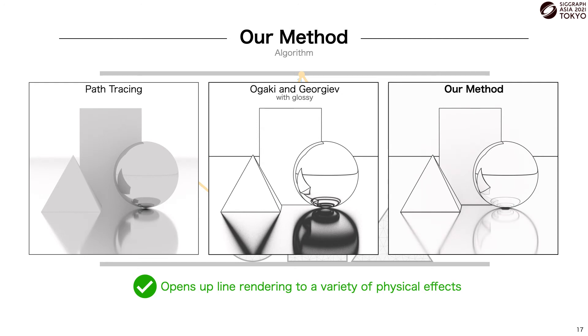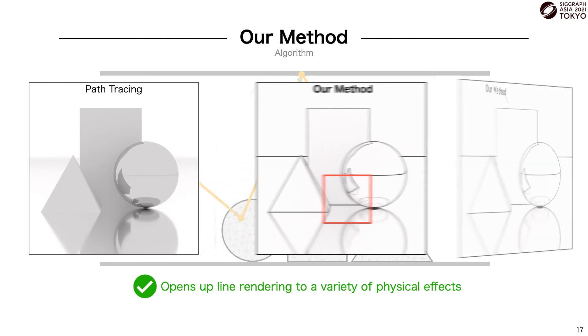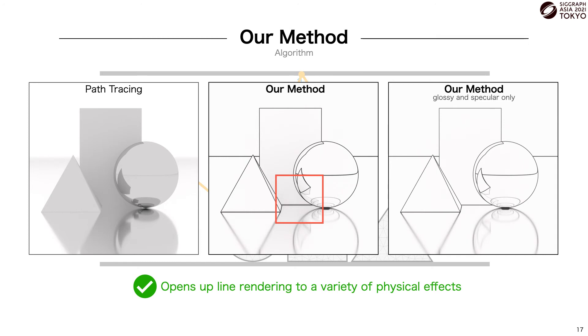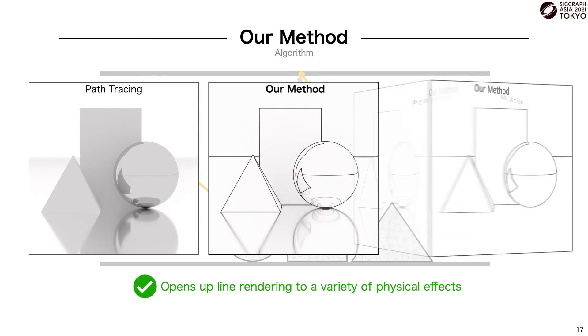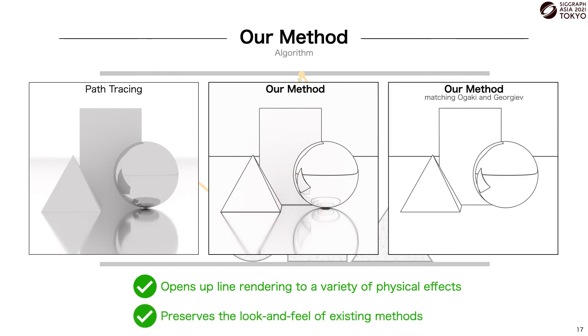However, testing for a line intersection at every edge of a path can result in a shading-like effect on rough surfaces, like on this diffuse cube here. This can be undesirable for some styles, so we can programmatically choose which materials reflect feature lines, for example, just the specular sphere and the glossy floor. We can even limit the line test to just directly visible surfaces and specular reflections, recreating the look and feel of Ogaki and Georgiev. And similar to existing methods, we can freely adjust the line width and color.